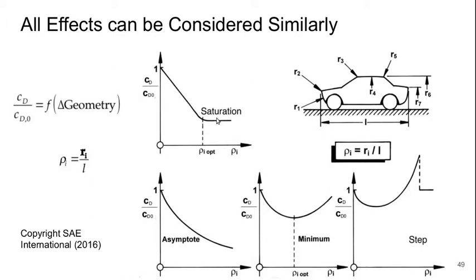First, there's a saturation effect where we define our parameter as rho — perhaps a radius over characteristic length of the vehicle — and we get some drag reduction up to a point, then it stops. Second, there's asymptotic behavior where drag drops continuously but the rate of decrease gets less and less as the parameter grows. Third, there's sometimes a minimum where if the parameter is very small or very large the drag grows, so there's a happy medium. Fourth, there's a step behavior: a rise, a dip, a rise, a step down, then a constant value. All effects we've seen fall into one of these four categories.